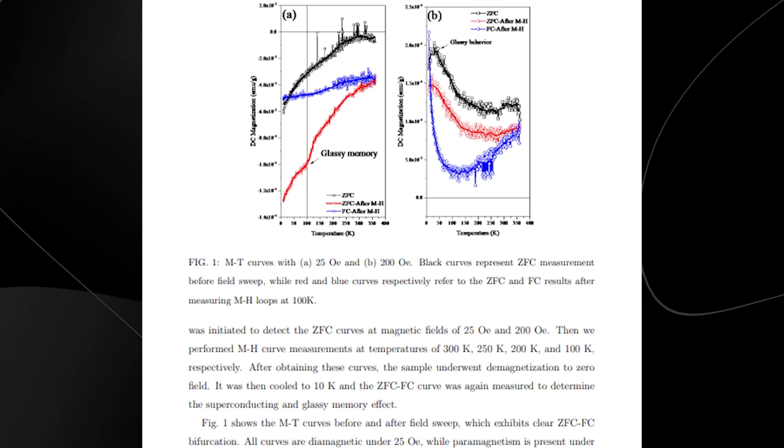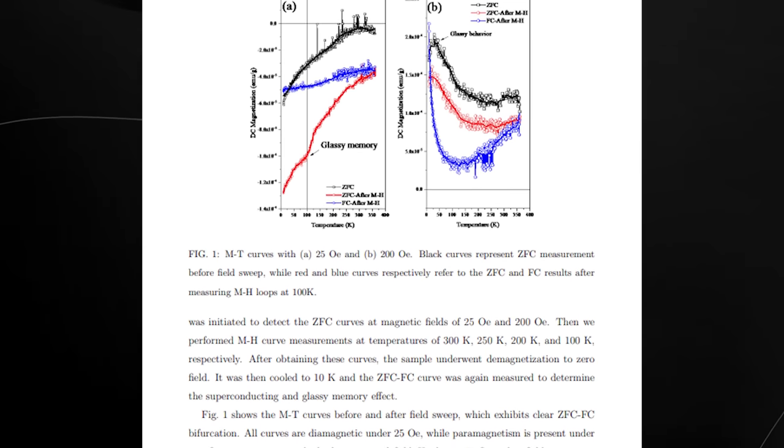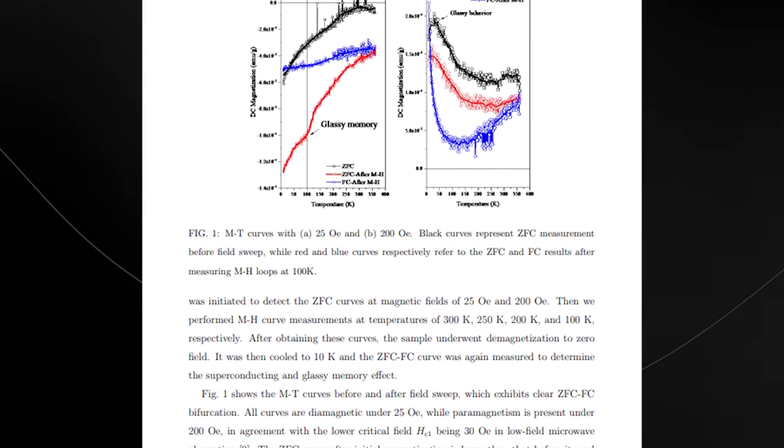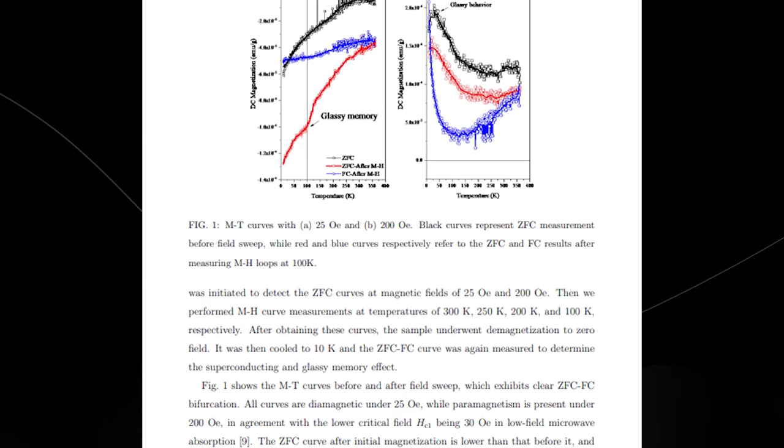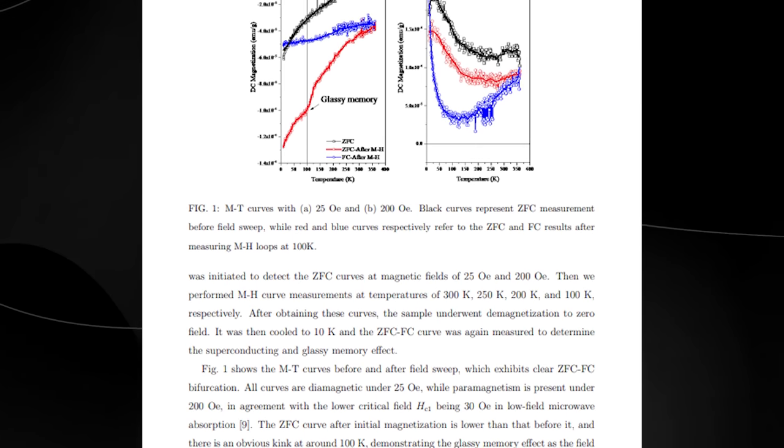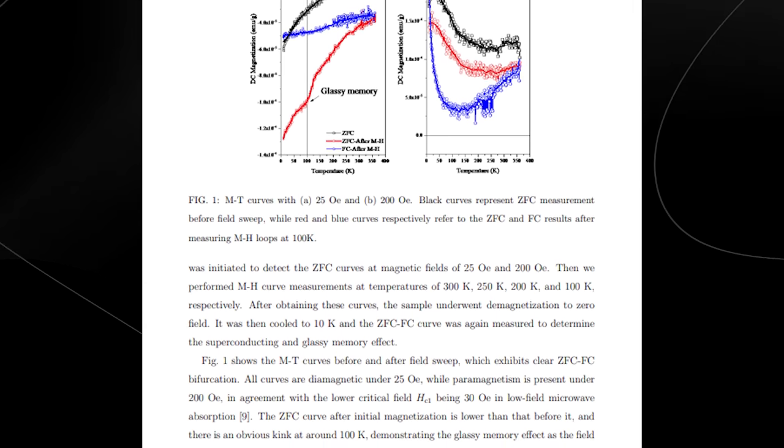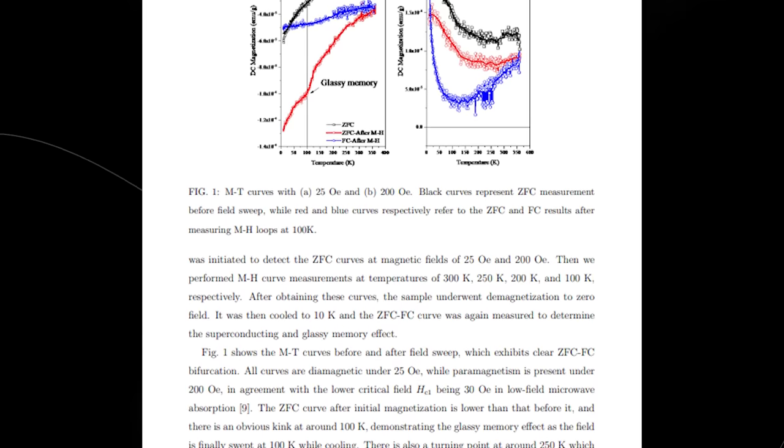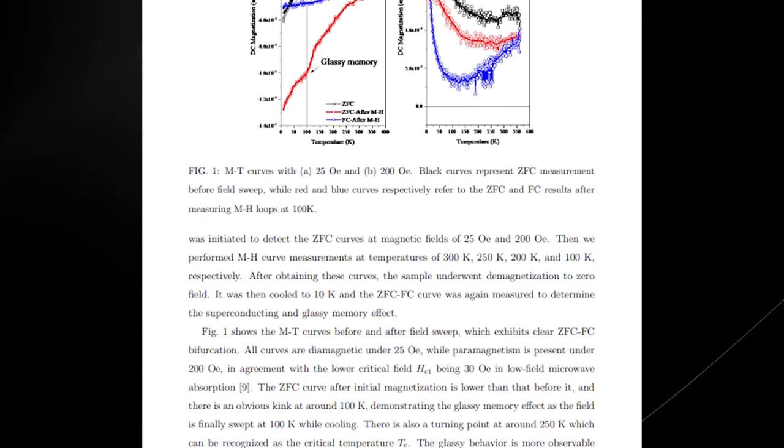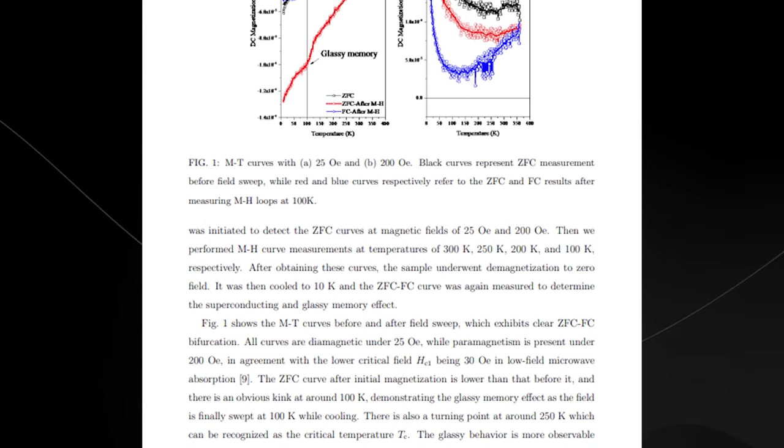Now let's take a look at the rest of the paper to see what actually happened, and after that we will take a look at what others are saying about this research. The researchers were studying how a certain material reacts to magnetic fields at different temperatures. They did this by measuring how the material's magnetism changed under two different strengths of magnetic fields, light and moderate, and at various temperatures ranging from cold, 100 Kelvin, to warm, 300 Kelvin.